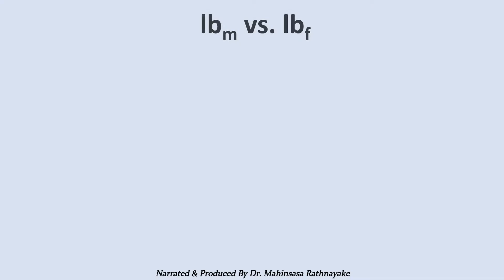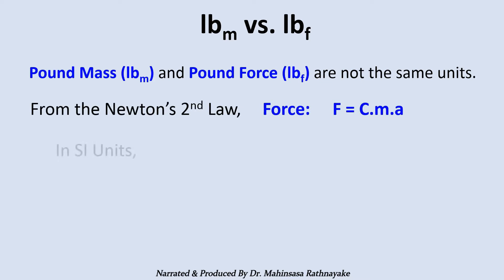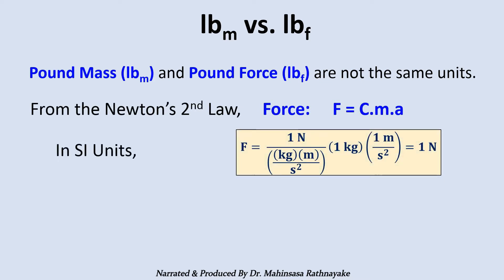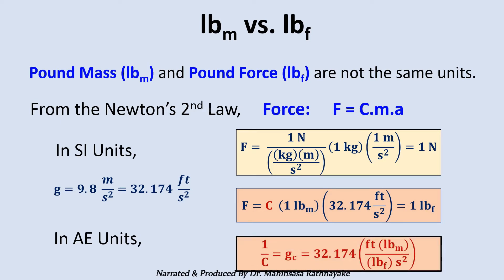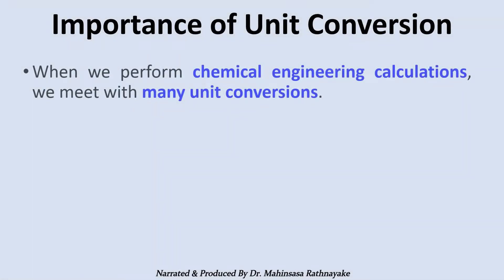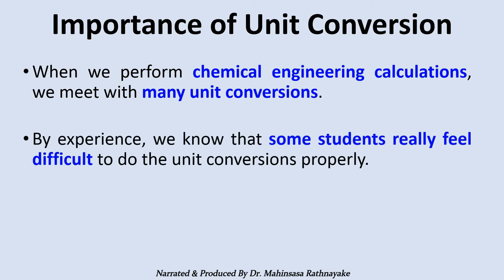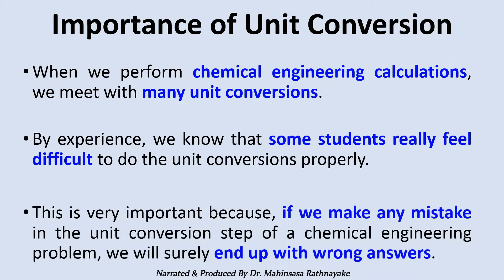In the American engineering unit system, there are pound mass and pound force units. When we apply the fundamentals, we can see that the conversion factor between pound force and pound mass is 32.174. When we perform chemical engineering calculations, we meet many unit conversions, and some students find it difficult to do unit conversions properly. If we make any mistake in the unit conversion step, we will surely end up with wrong answers.